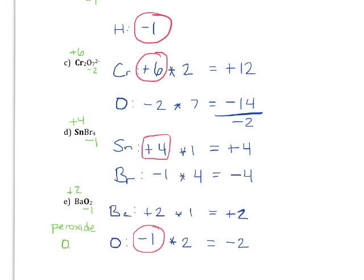Peroxide is O₂ with a two minus charge, instead of just one oxygen with a two minus charge. So that's peroxide — that is a different oxidation state of oxygen. Most of the time oxygen has that minus two oxidation state, but every so often it will have minus one, so just keep your eyes open for that. Remember that oxidation states are different from charges: with oxidation states, we put the sign — either positive or negative — and then the value first, and we do write in the number one.